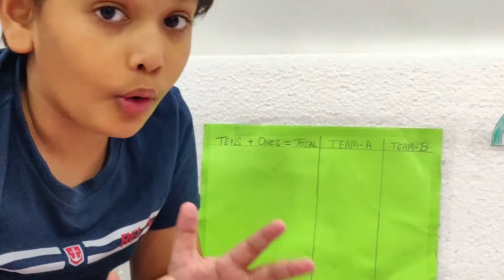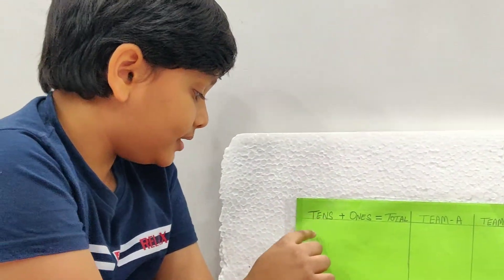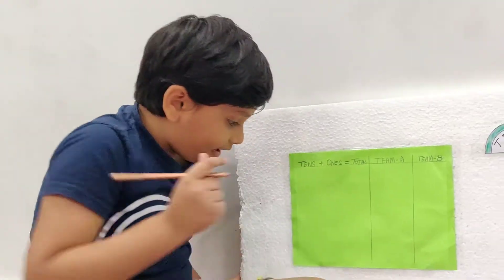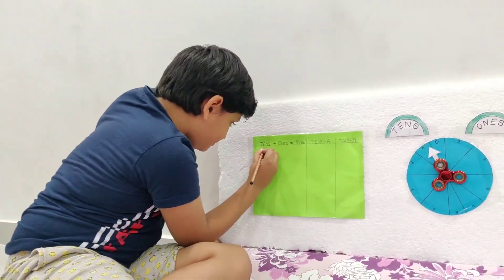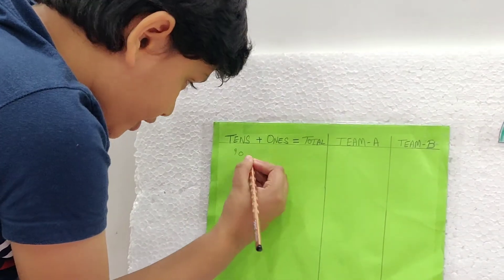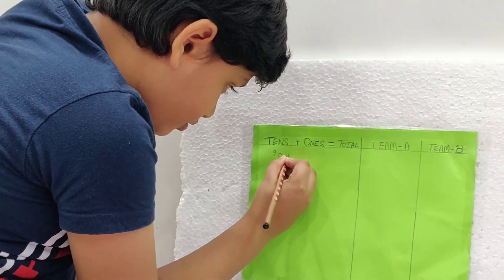So now, it's tense. So it would be 90. We will write 90 here. 9 and 0.